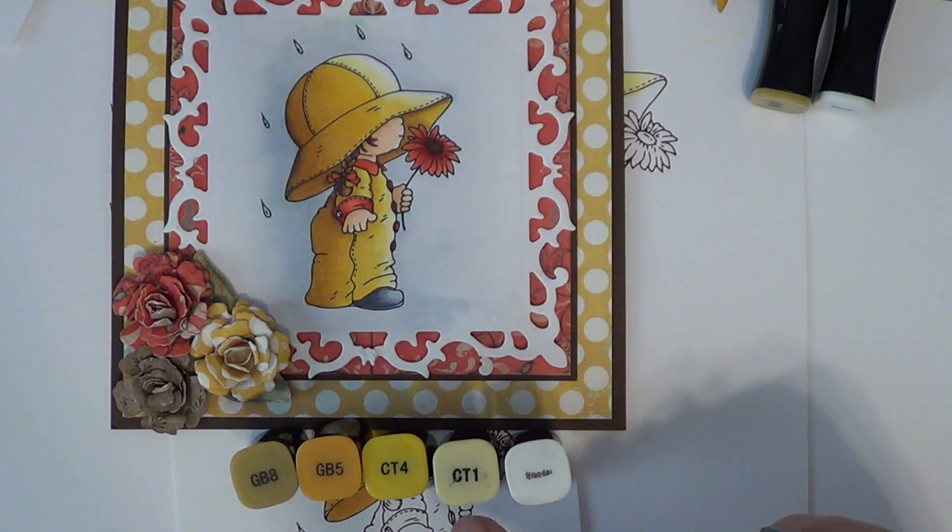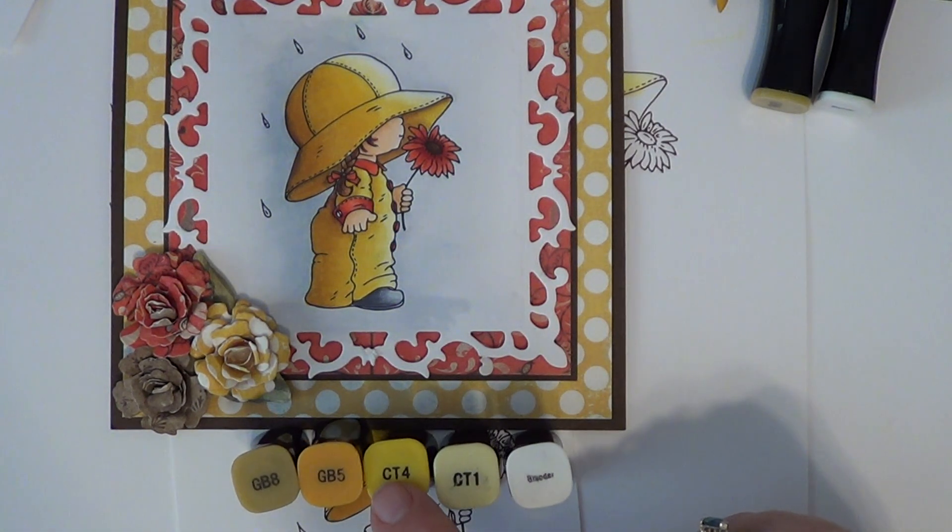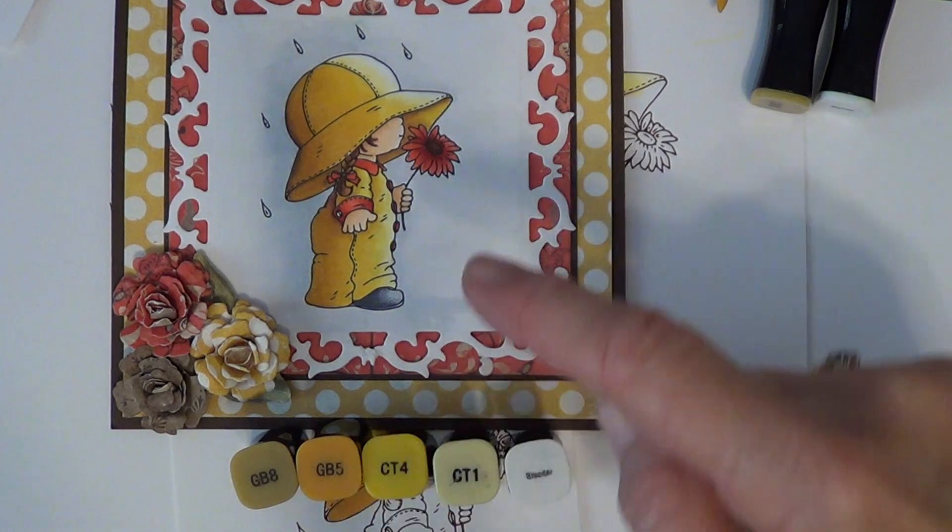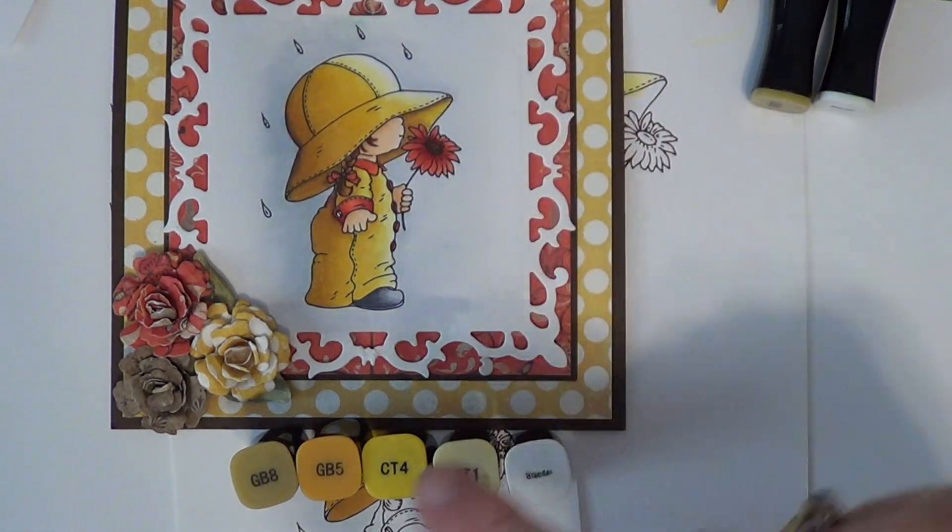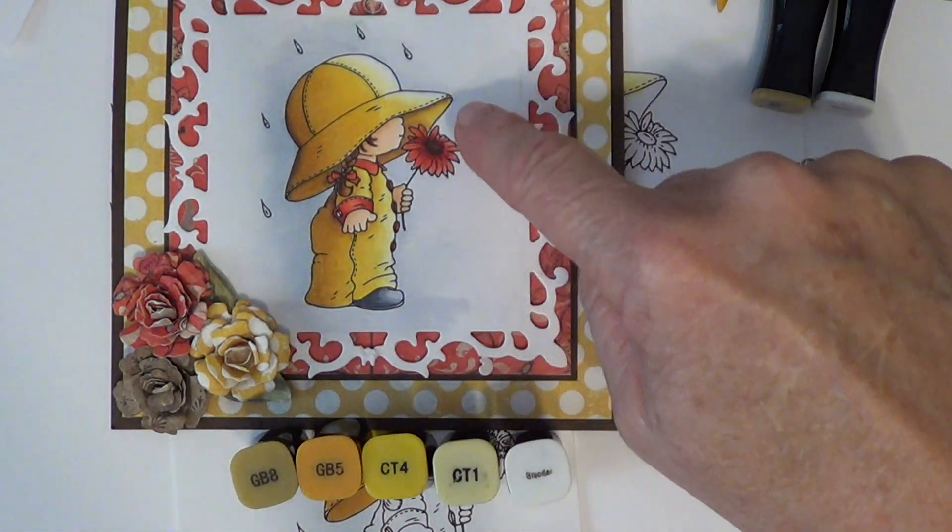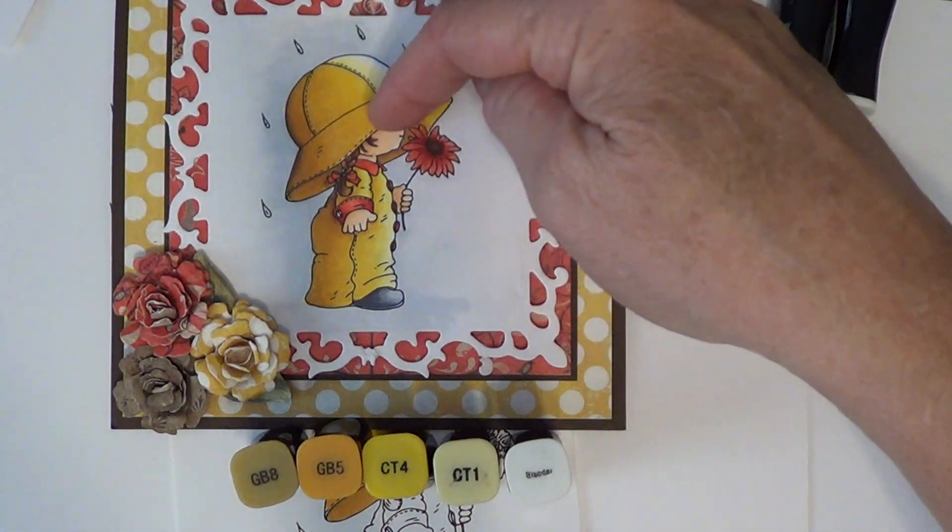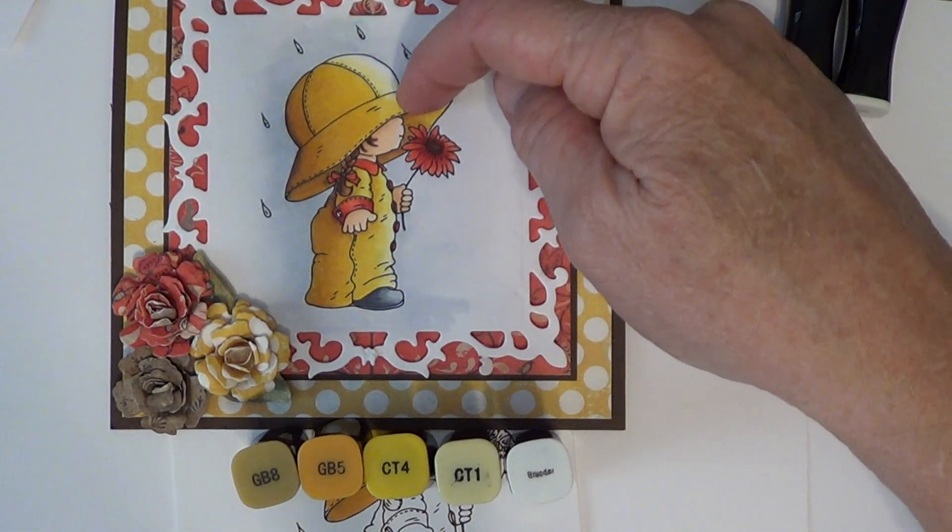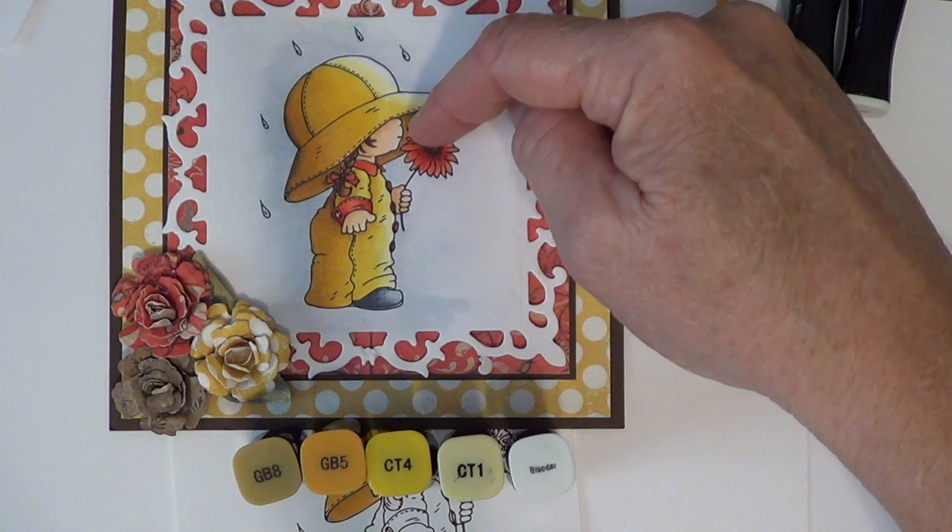The colors I'm going to use today are CT1, CT4, and GB5. That's what I'm using on most of the hat, and then I'm going to add a little bit of GB8 underneath her hat to make the top brim of her hat look closer to me or layered on top of the underneath portion.